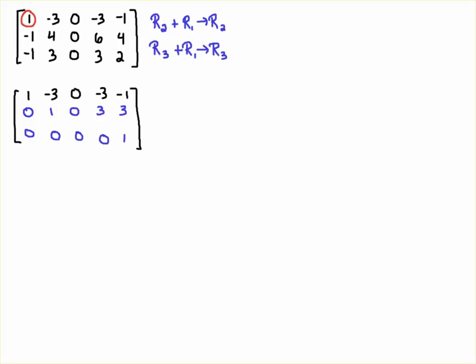So I'm going to pick the upper left one there to be the pivot and then I'm going to perform the following row operations. So I'm just going to add row 1 plus row 2 and replace row 2, and then add row 1 plus row 3 and replace row 3. And when I do that I get the following matrix.